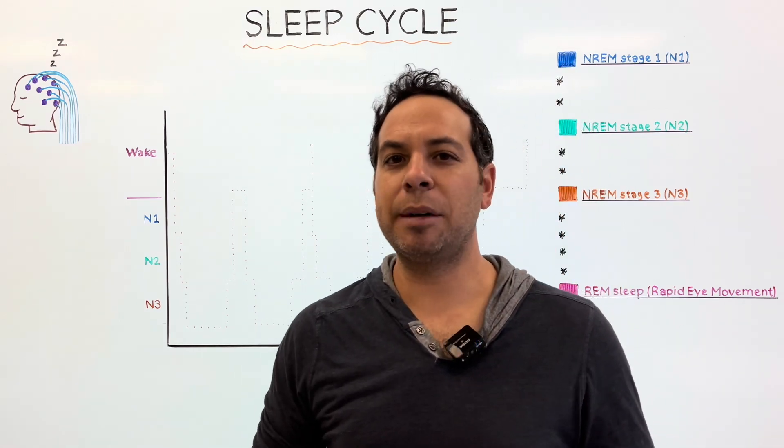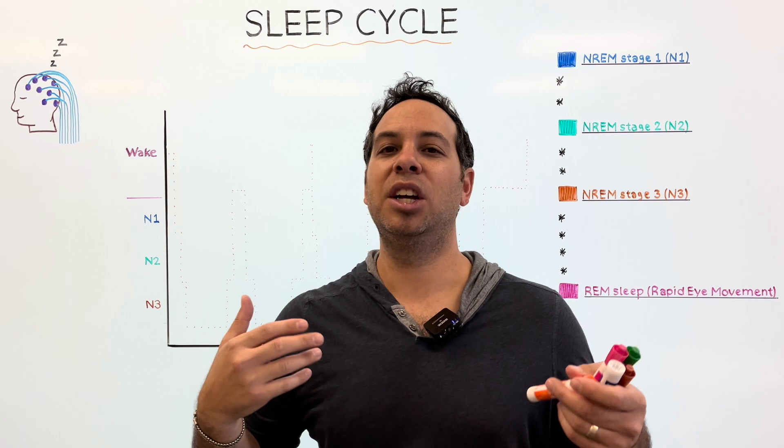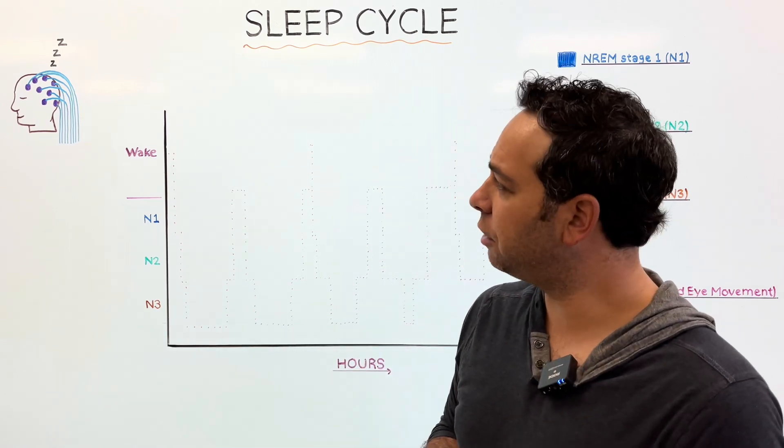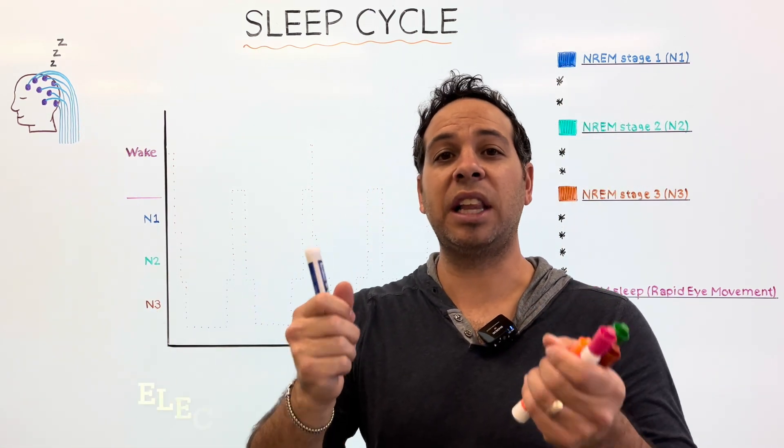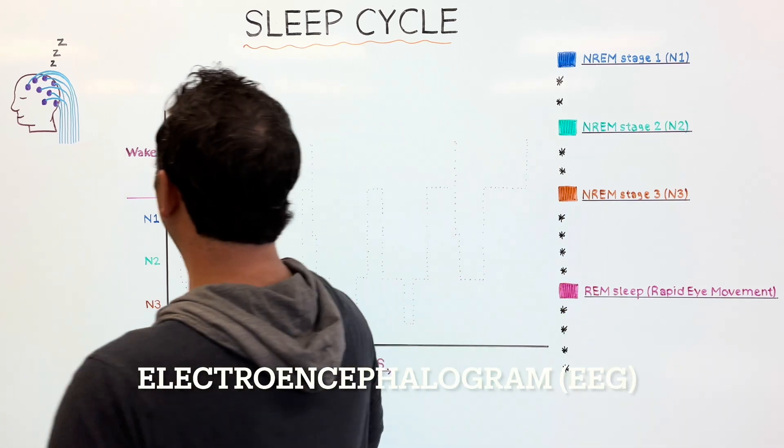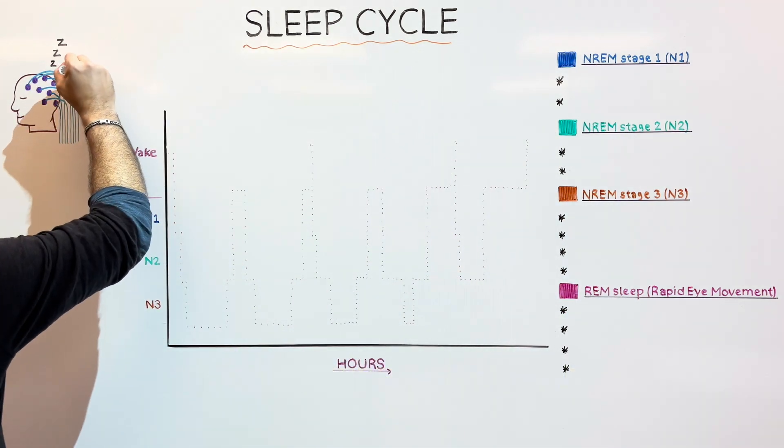Now, the first thing to think about is how do researchers know what happens in your brain while you're sleeping? Well, they use a device primarily called an electroencephalogram, also known, much easier, as an EEG.